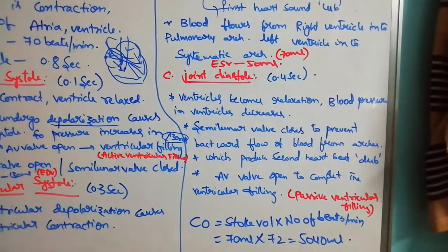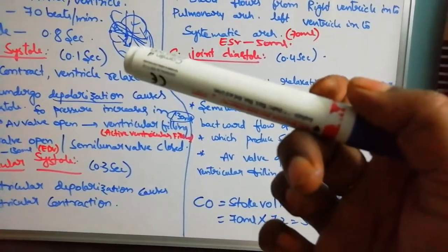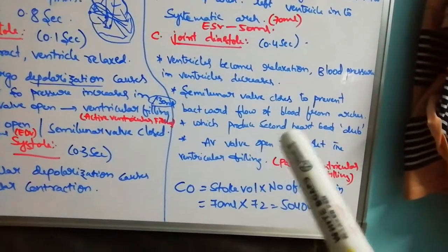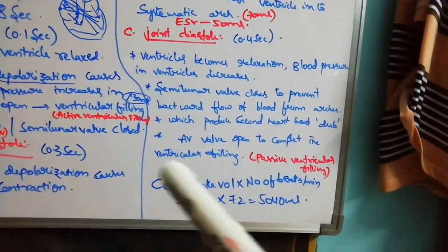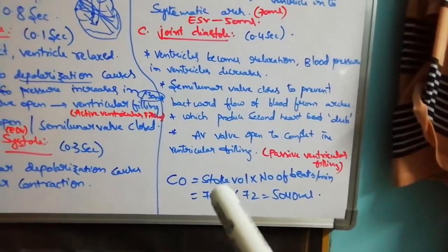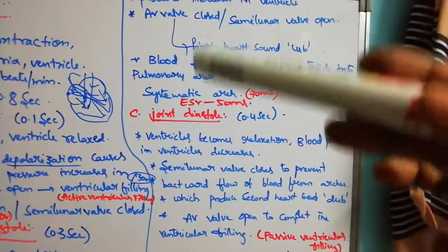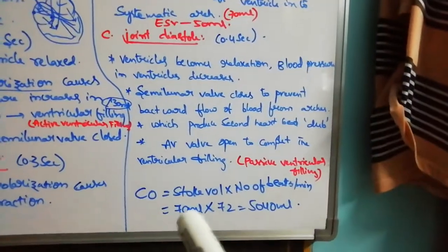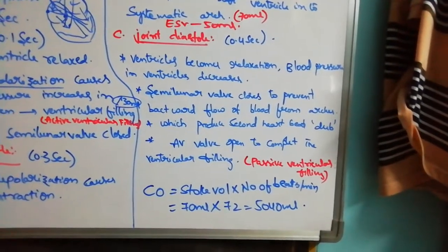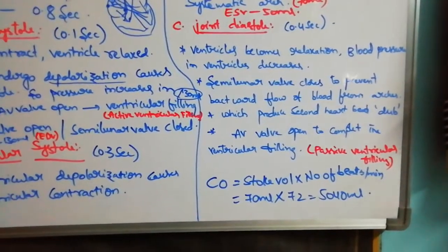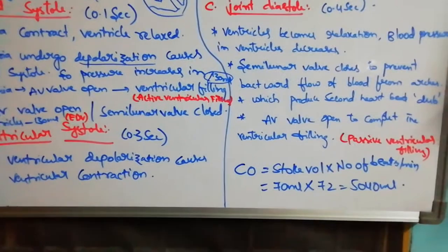During joint diastole, both atria and ventricle undergo relaxation. Pressure in the ventricle decreases, and backward flow from the aortic arch is prevented by the closing of semilunar valves, which produces the second heart sound 'dub.' AV valves then open and partial ventricular filling takes place. Cardiac output equals stroke volume (70 ml) multiplied by heart rate (72 beats/min) = approximately 5040 ml or 5 liters. In vigorous conditions, it becomes 21 liters; in athletics, 35 liters.